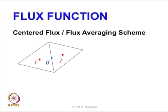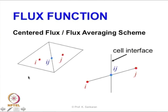The centered flux scheme is basically a very simple averaging process. Let us say we have two elements at an interface, called interface ij, and there are two triangles neighboring to that. The field we are going to compute at the interface is nothing but the average of those two fluxes.